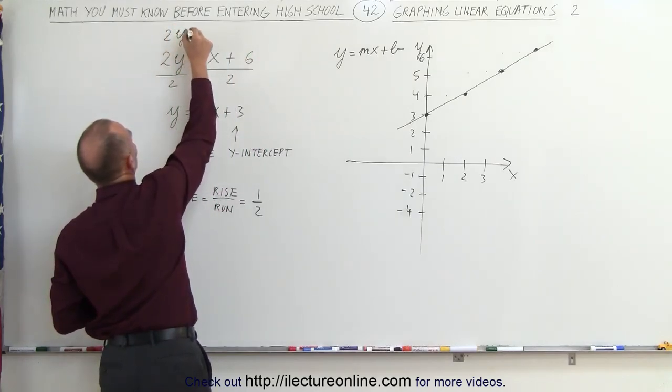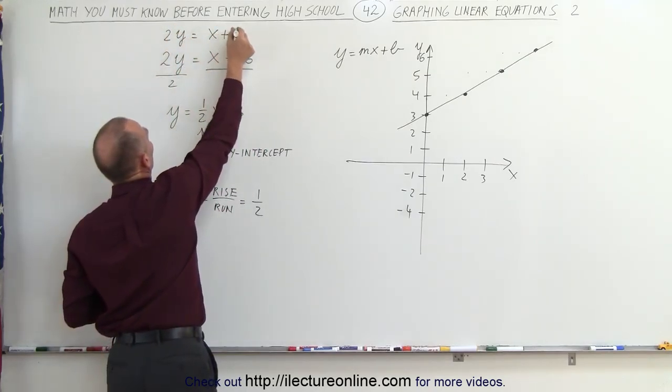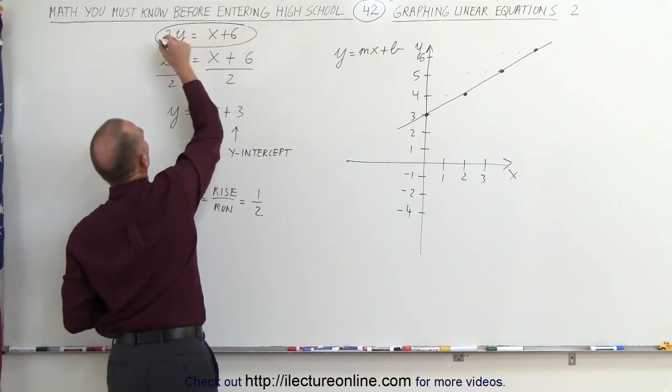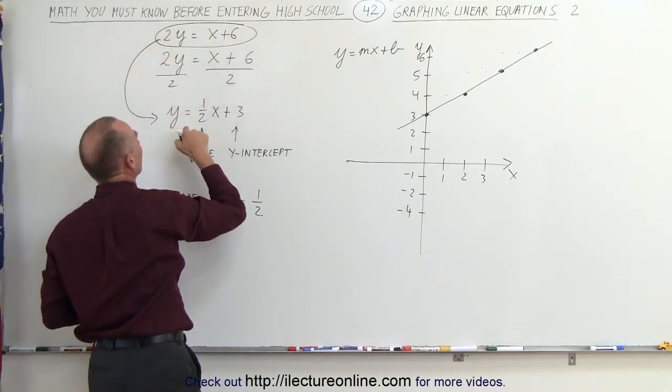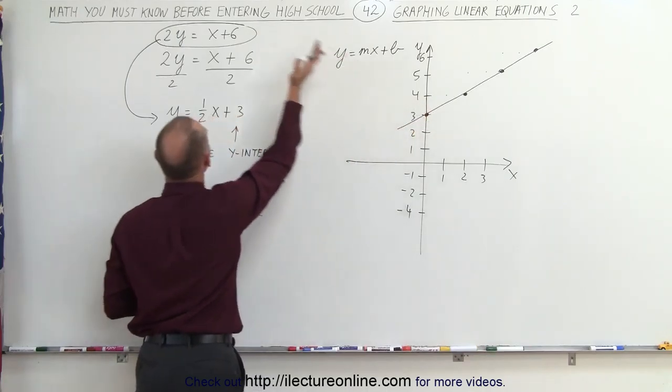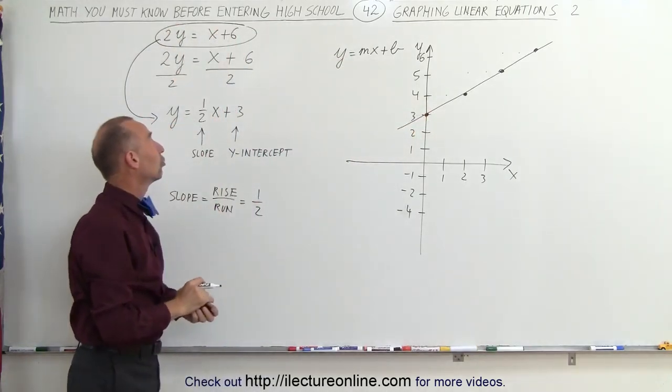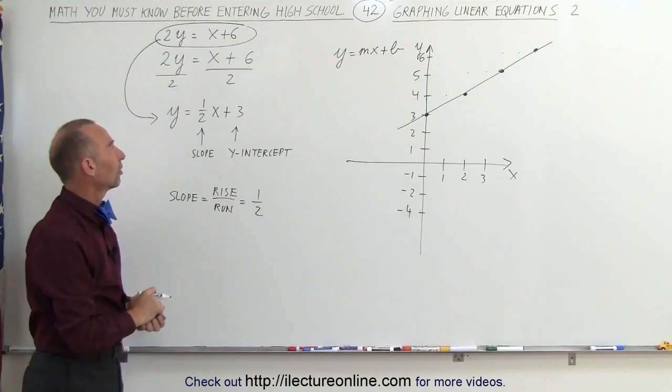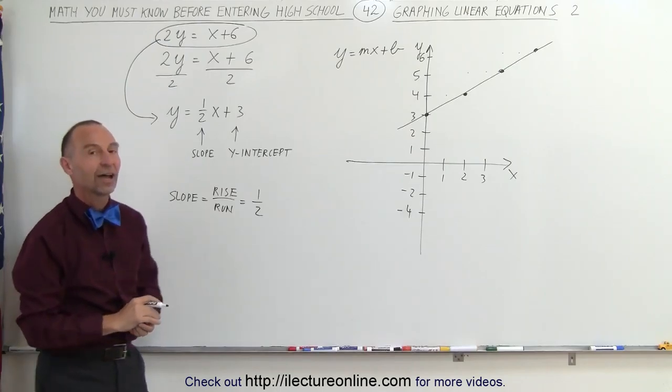Let me write the equation by itself again over here. So starting with this equation, I can then change it to the y-intercept form like this, so I can graph it, but ultimately, that line represents the solution to my original equation, 2y equals x plus 6. And that's how that's done.